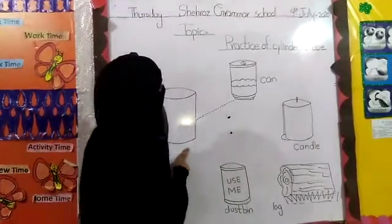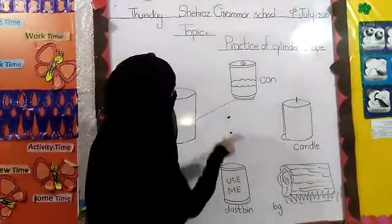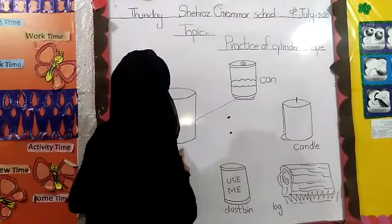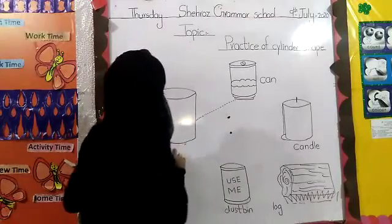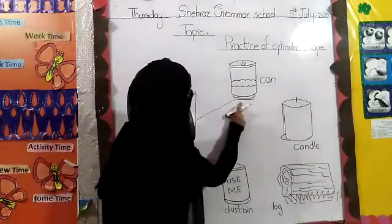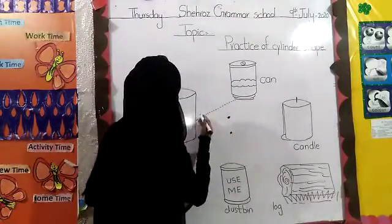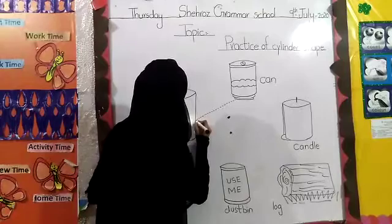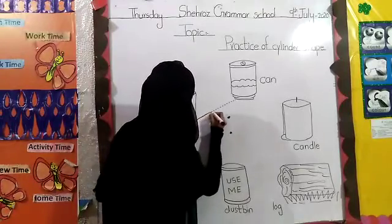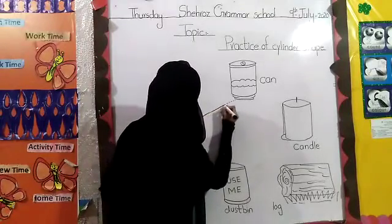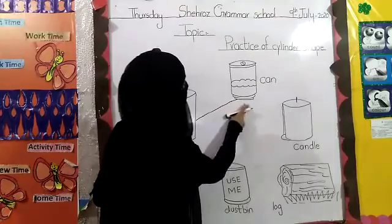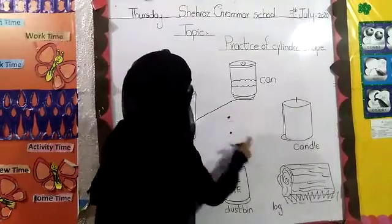Ab hum Cylinder ko Cylinder shapes ke saath match karein ge. Yeh Cylinder hai aur yeh kya hai? Cylinder shape hai. Is liye hum Cylinder ko Can ke saath match kar dein ge. Aise. Yeh Cylinder shape hai na.